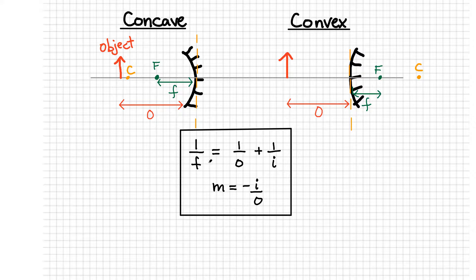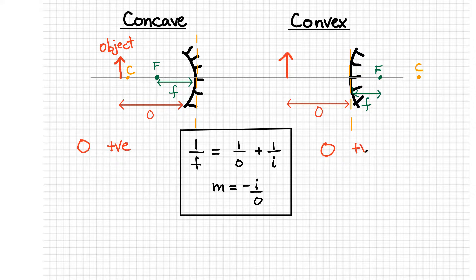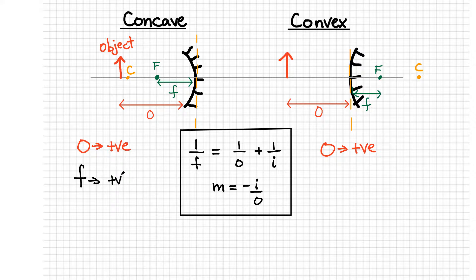There have to be pluses and minuses whenever we substitute values into these equations. For both cases, I'm placing an object in the front, so O is simply going to be a positive value. O is always positive — that's the same for both cases. The other term is the focal distance F. For a concave mirror, F is always going to be a positive value. For a convex mirror, F is always going to be a negative value.